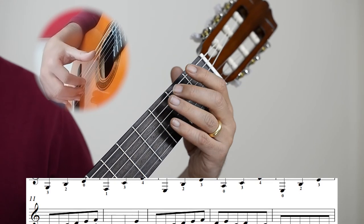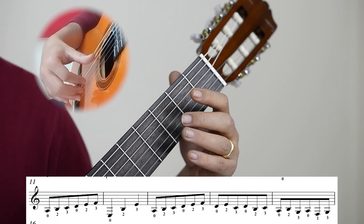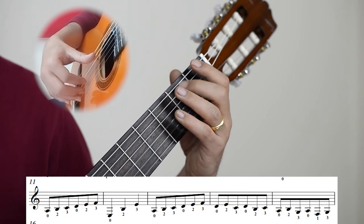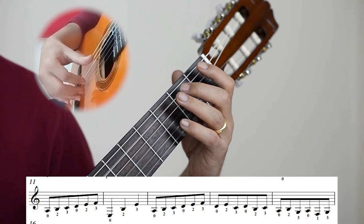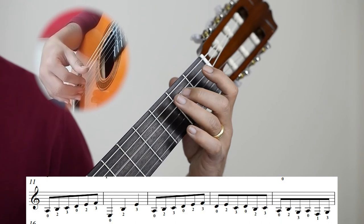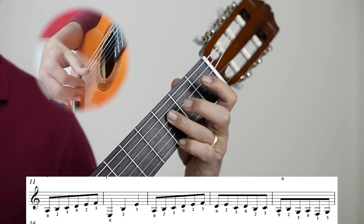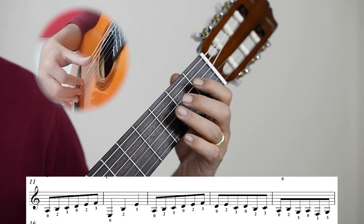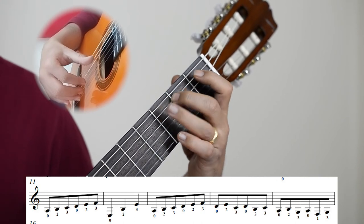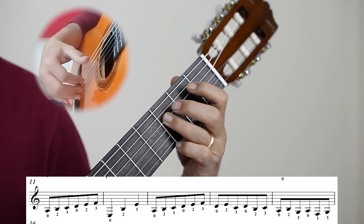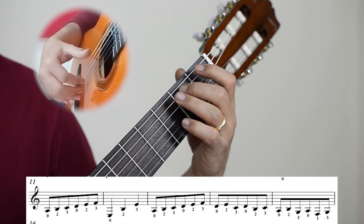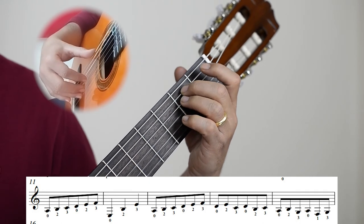And then we have a kind of like a scale starting from A. The fifth string open. A, B, C, D, E, F. The count is one, and two, and three, and. To this chord, which is an E minor.